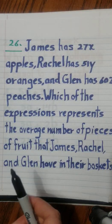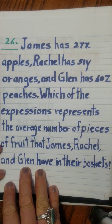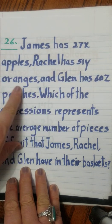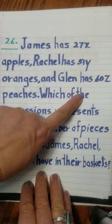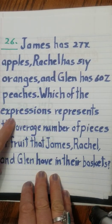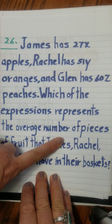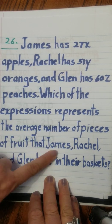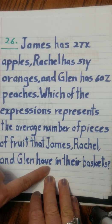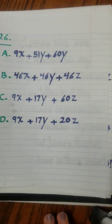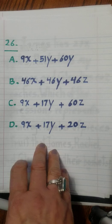And this is the question again. So it's James has 27x apples. Rachel has 51y oranges. And Glenn has 60z peaches. Which of the following expressions represent the average number of pieces of fruit that James, Rachel, and Glenn have in their baskets. And you should pick one of these options.